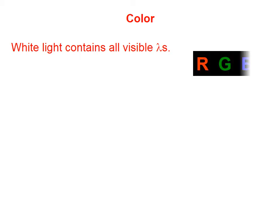White light contains all visible wavelengths. I'm going to simplify all the visible wavelengths into three main wavelengths: red, green, and blue. And that combination gives us white light.